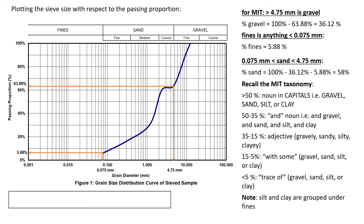Silt and clay are grouped under fines. Applying the MIT taxonomy, the MIT soil classification is simply SAND, because sand is greater than 50% at 58%, so it is written in capitals. The percent gravel is 36.12%, which is between 50% and 35%, which is why we include 'and gravel.' The percent fines is between 5% to 15%, so we say 'with some fines.' It's really as simple as that for the MIT classification.